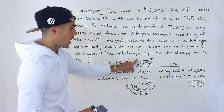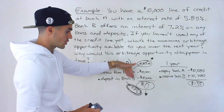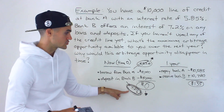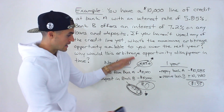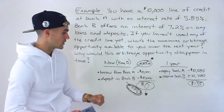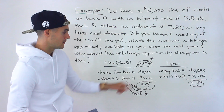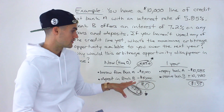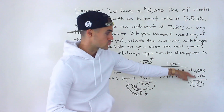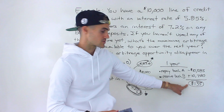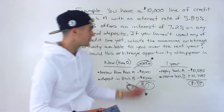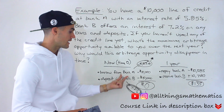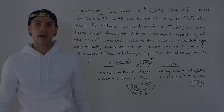Bank A would start raising their interest rate, and Bank B would start lowering theirs, noticing they're paying too high interest. With time, these rates would meet somewhere in the middle between 5.85% and 7.2%. The arbitrage opportunity would then disappear because the interest rates would be equal. But at the present interest rates, there is an arbitrage opportunity — you can borrow from Bank A and deposit in Bank B.